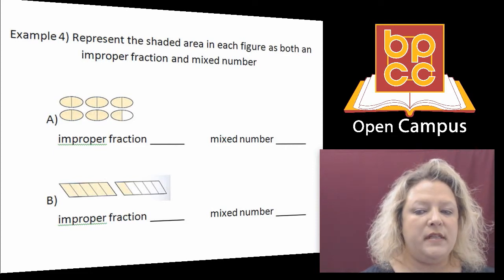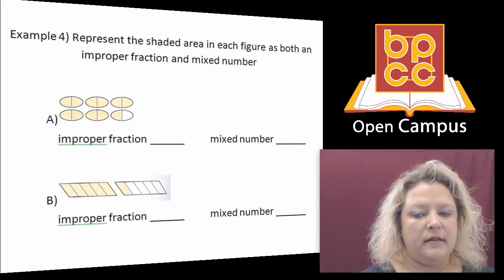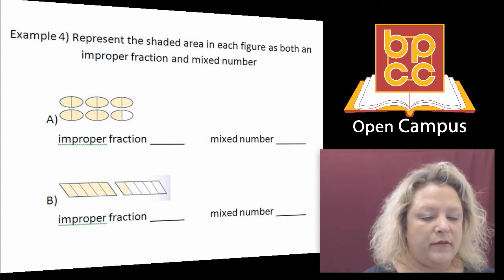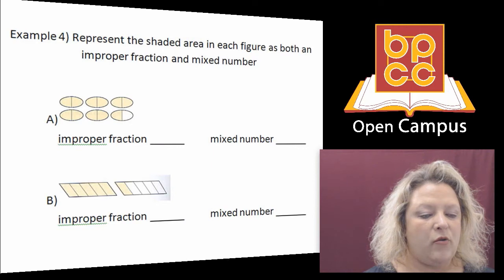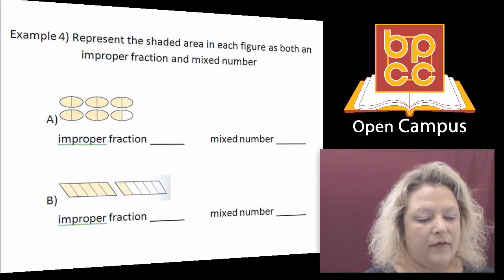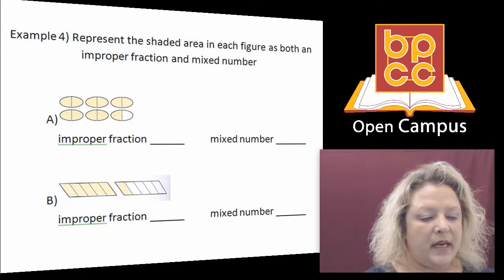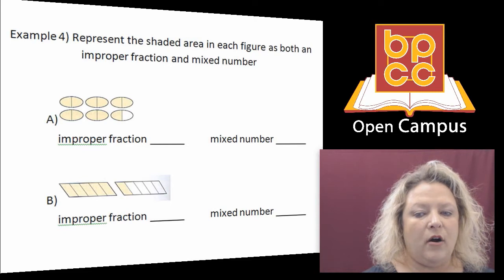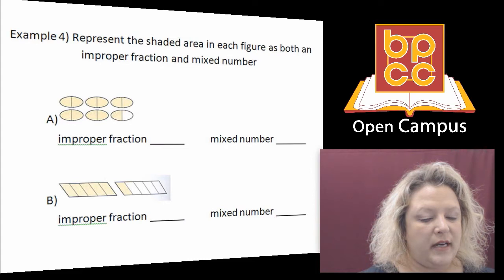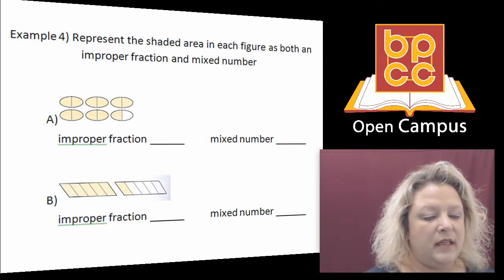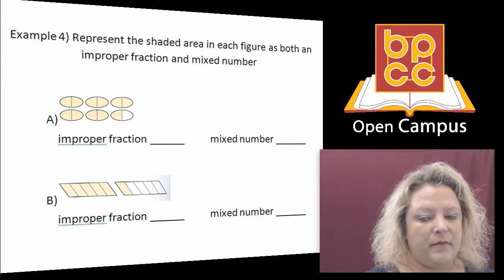On the next slide, when you see this one, you look at part A and you have six ovals and each one of those is divided into two equal parts. So your denominator for your improper fraction will be two. Then you ask yourself how many of those pieces are shaded. And you see there are two, four, six, eight, ten, eleven out of those shaded. So your improper fraction would be eleven divided by two. And then we're going to change that to a mixed number in just a minute.